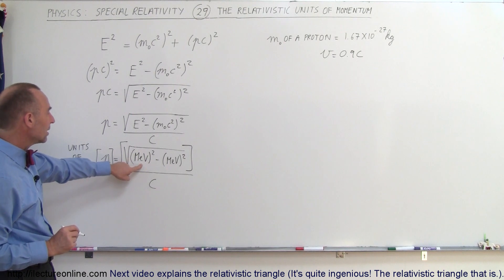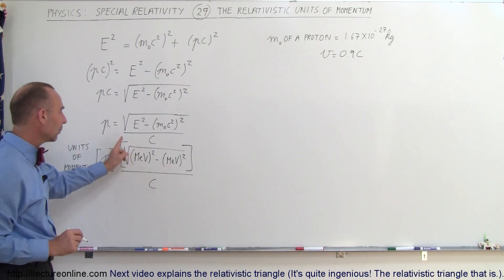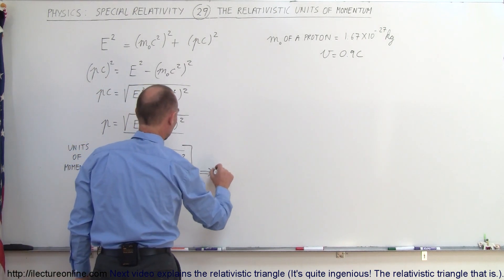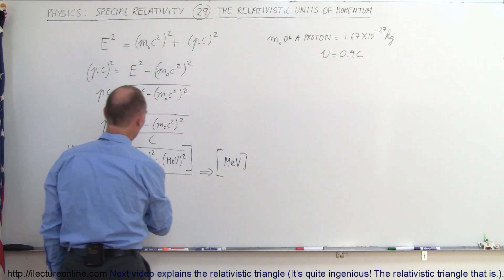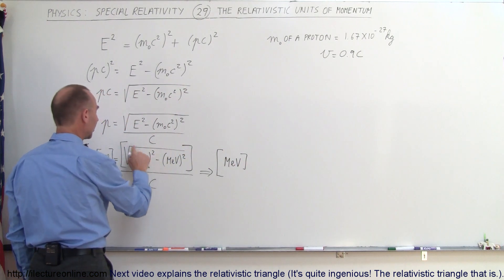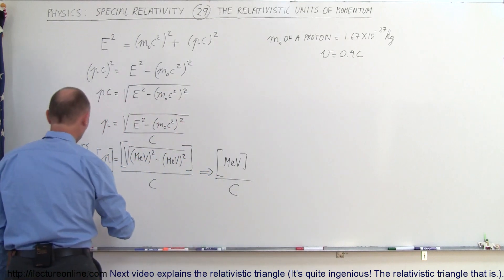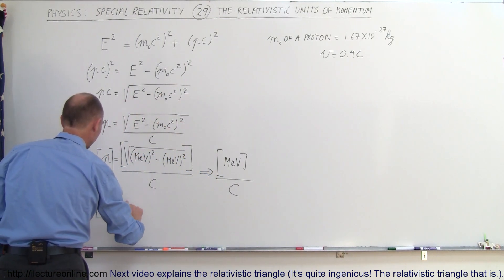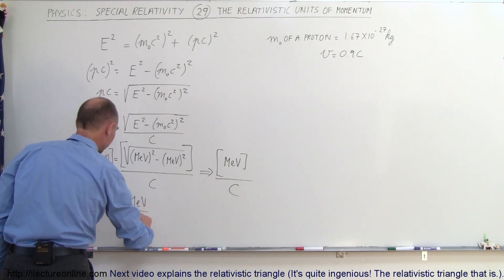If we square the units of MeV and then take the square root of that, in essence the units simplify back to MeV. Because it's MeV squared and then we take the square root — and then divide that by the speed of light — which tells us that the units of momentum will typically be written in terms of MeV, million electron volts, divided by the speed of light.